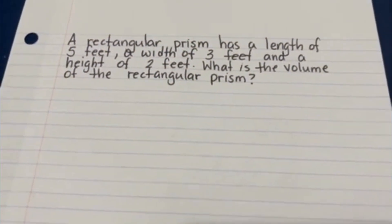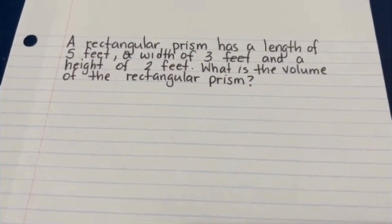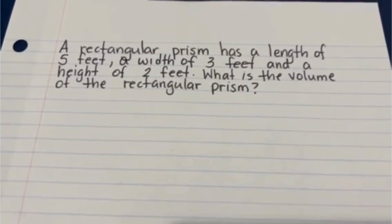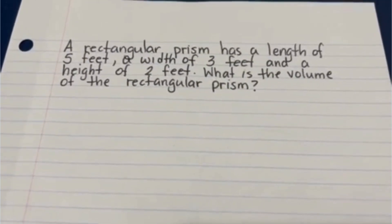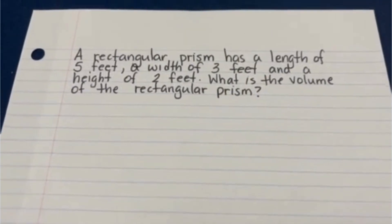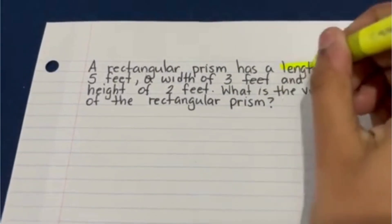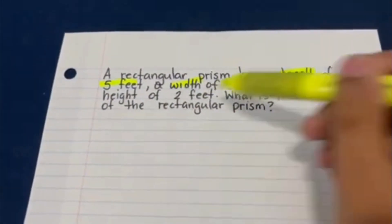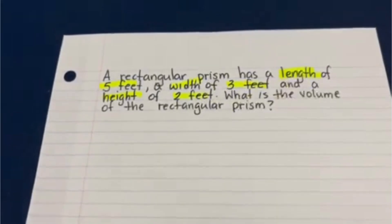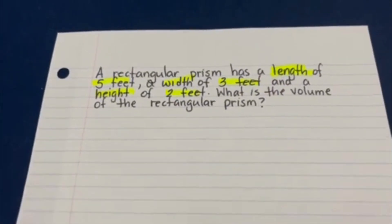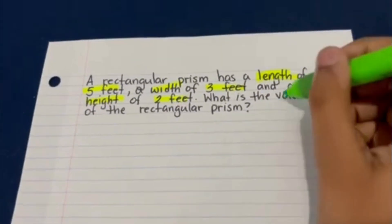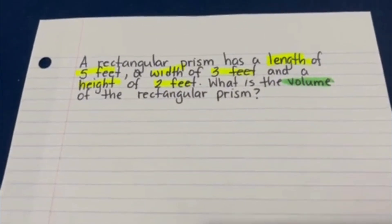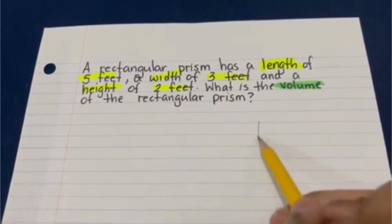A rectangular prism has a length of five feet, a width of three feet, and a height of two feet. What is the volume of the rectangular prism? First, let's highlight. We know that the length is five feet, the width is three feet, and the height is two feet. We also know that we're trying to find the volume. So, let's draw this rectangular prism.